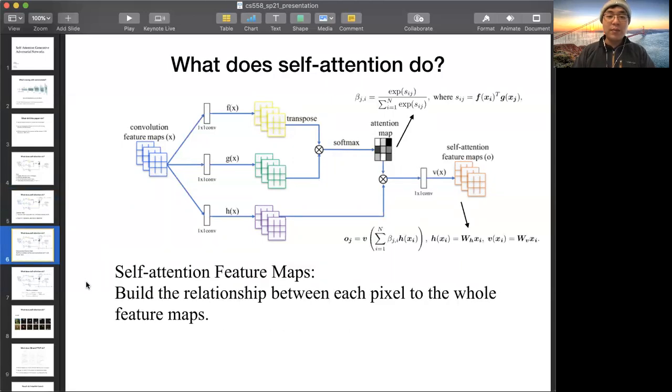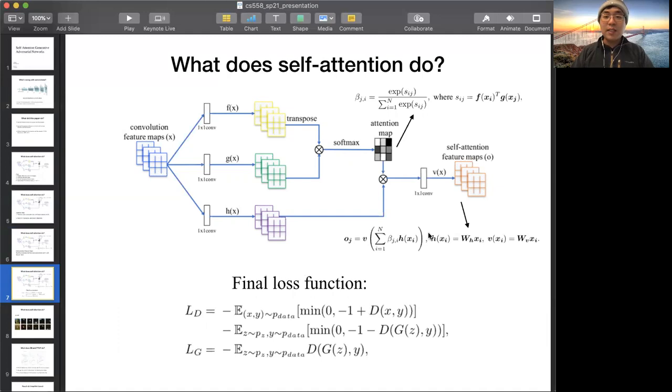We want to find the self-attention feature maps. Here, we build a relationship between each pixel to the whole feature maps. After we get the output, we show the final loss function. This is very similar to the loss function of the GAN.